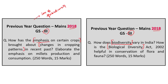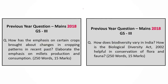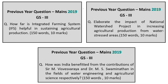In 2019, General Studies Paper 3 mains had around 7 questions related to agriculture, farmers and the food sector, with particularly 3 questions on agriculture itself. Every year, agriculture-related questions are getting more importance in the mains paper and also in the prelims paper. In the past two years, there was at least one prelims question focusing on the theme of hunger. All these questions appeared in 2019 mains relate to agriculture.